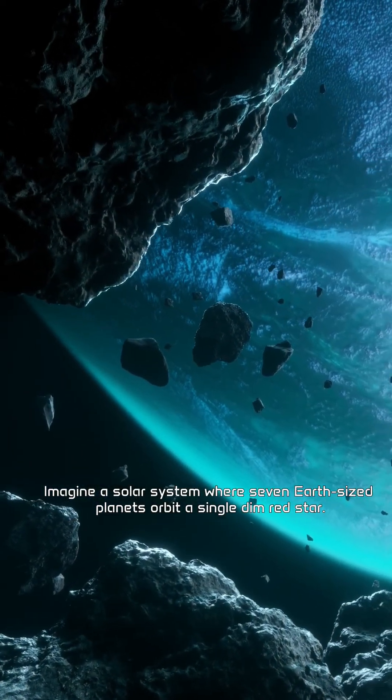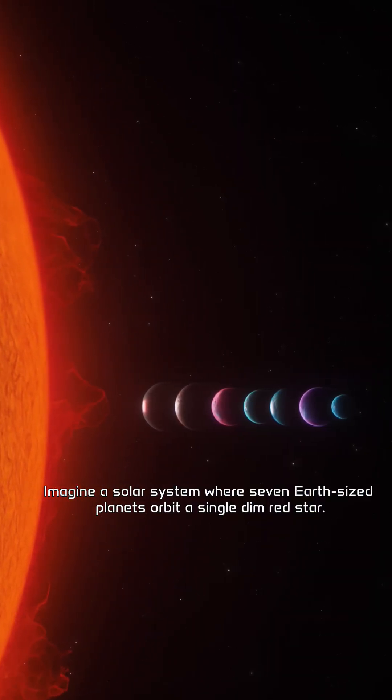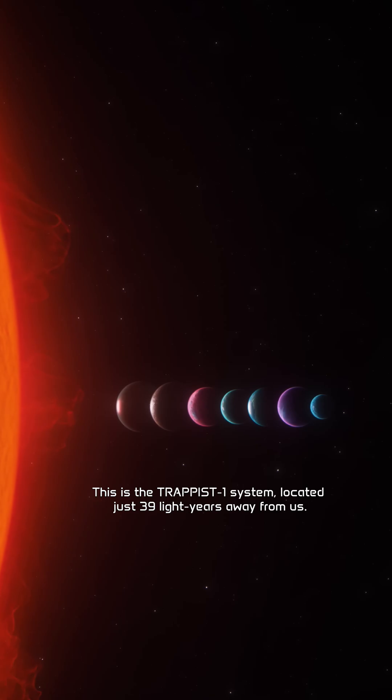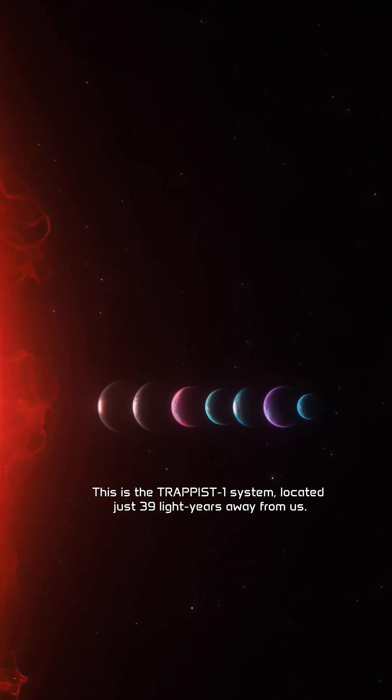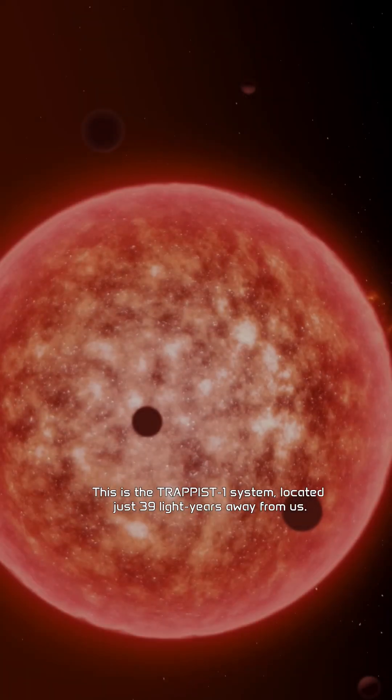Imagine a solar system where seven Earth-sized planets orbit a single dim red star. This is the TRAPPIST-1 system, located just 39 light-years away from us.